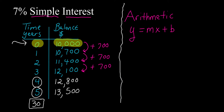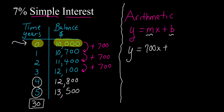Simple interest means arithmetic growth — you're adding the same number each time to get to the next year's balance. We're going to use y equals mx plus b. I'll replace m with the common difference, which is seven hundred, and replace b with the initial deposit, which is ten thousand. So the equation is y equals seven hundred times x plus ten thousand.